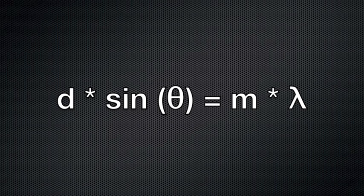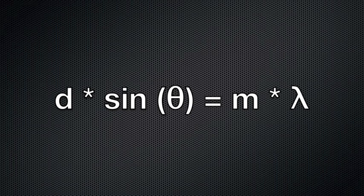Constructive interference is modeled by the equation d sin theta equals m lambda, where d is the distance between slits, theta is the angle from the slit to the light fringe, m is the order of interference, and lambda is the wavelength.